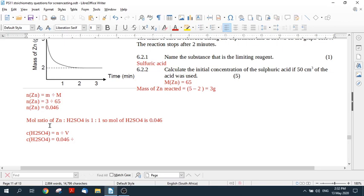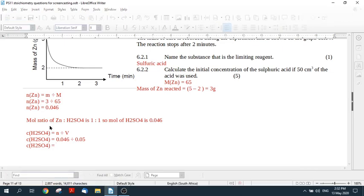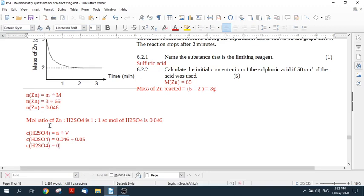So the concentration of sulfuric acid is going to be 0.046 divided by how much was it? 50 cubic centimeters. Remember concentration must be in moles per cubic decimeters. So 50 cubic centimeters is 50 over a thousand which is 0.05. So on your calculator what will the concentration of sulfuric acid be? I get 0.92 moles per cubic decimeter.